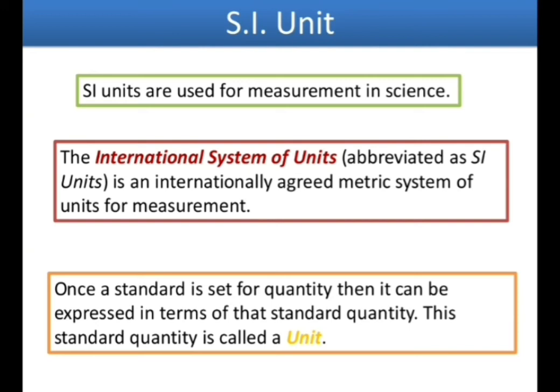The standard system of units can be expressed in terms of a standard quantity. This standard quantity is called a unit. Once we decide on the standard quantity for a particular physical quantity, we fix its unit — like for length we decided meter, for mass we decided kg, for temperature we decided Kelvin. All these are the standard units decided by the SI system, the Standard International system of units.